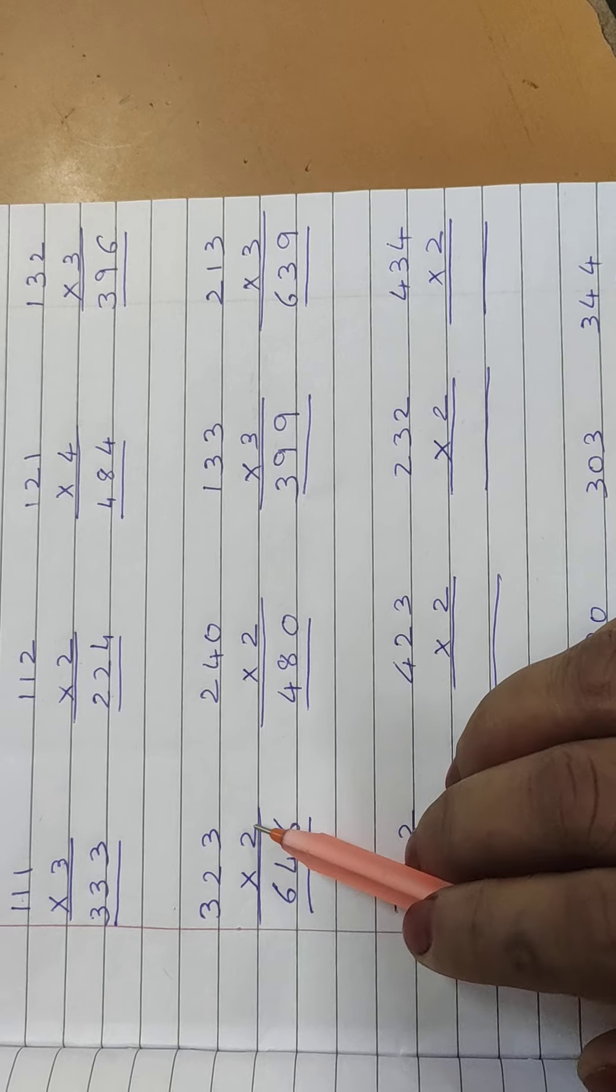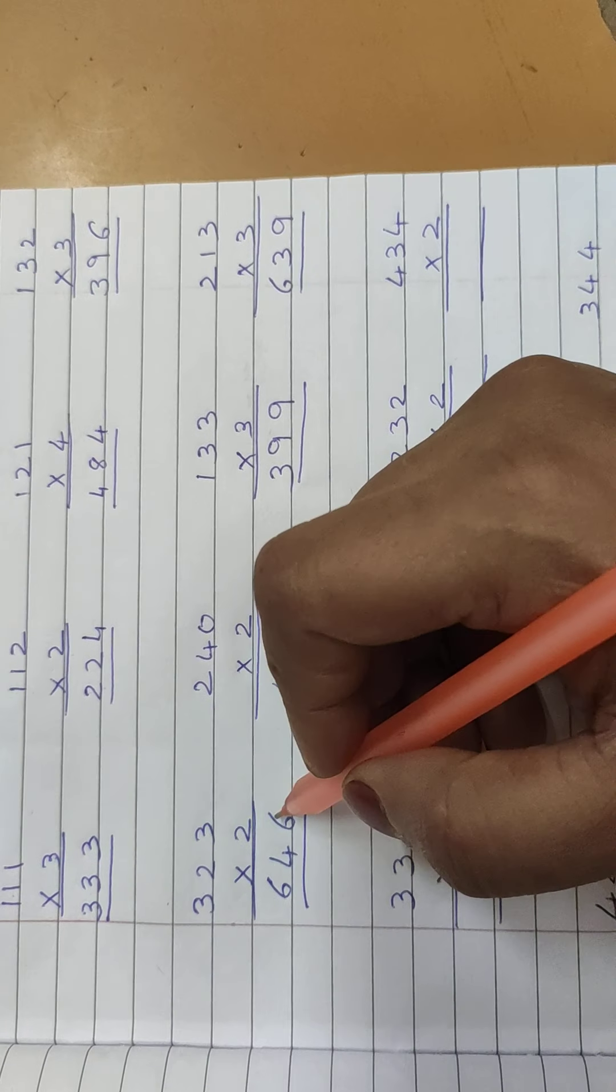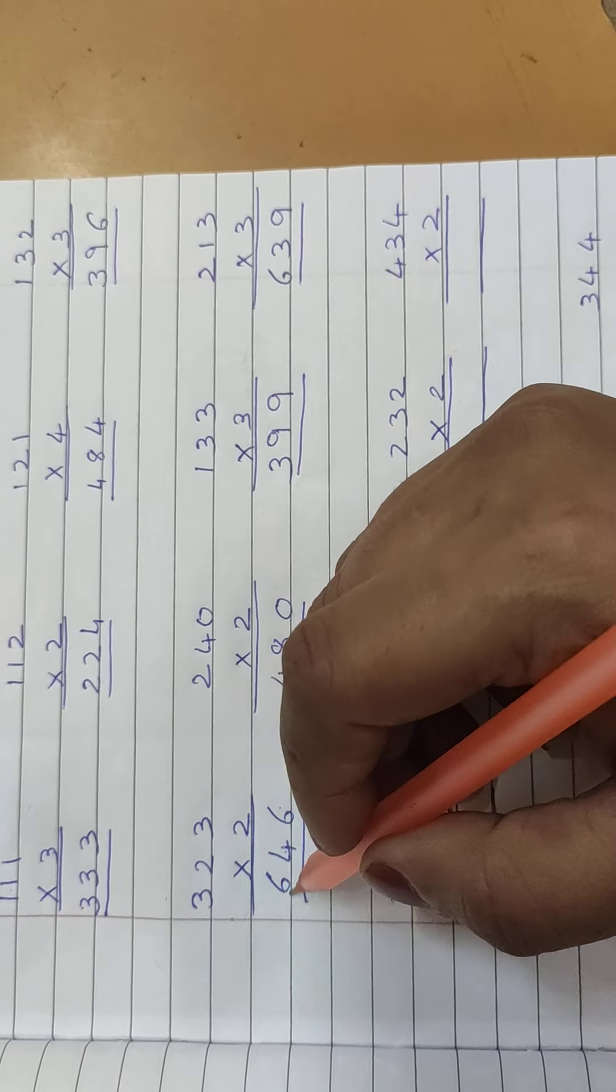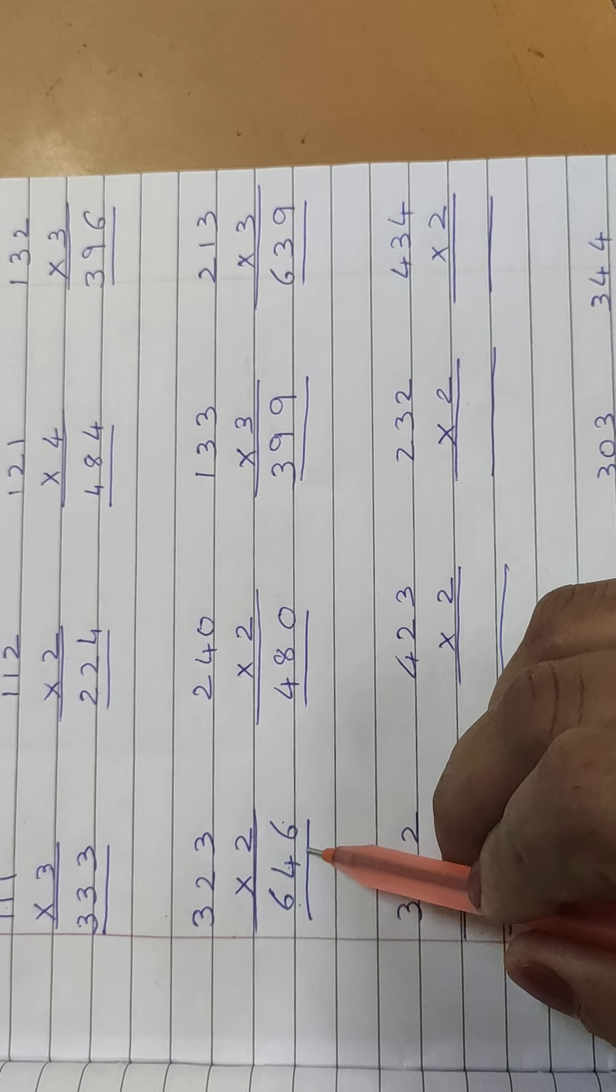Now 323 multiply by 2. 2 threes are 6, 2 twos are 4, 2 threes are 6. 646.